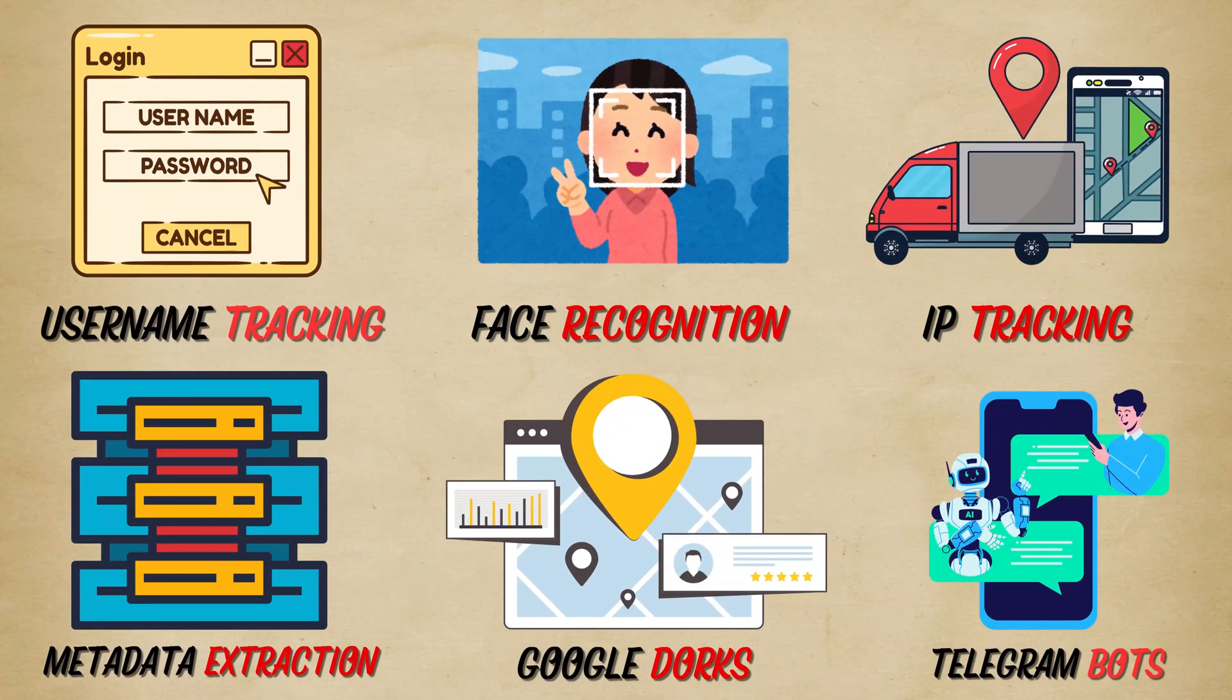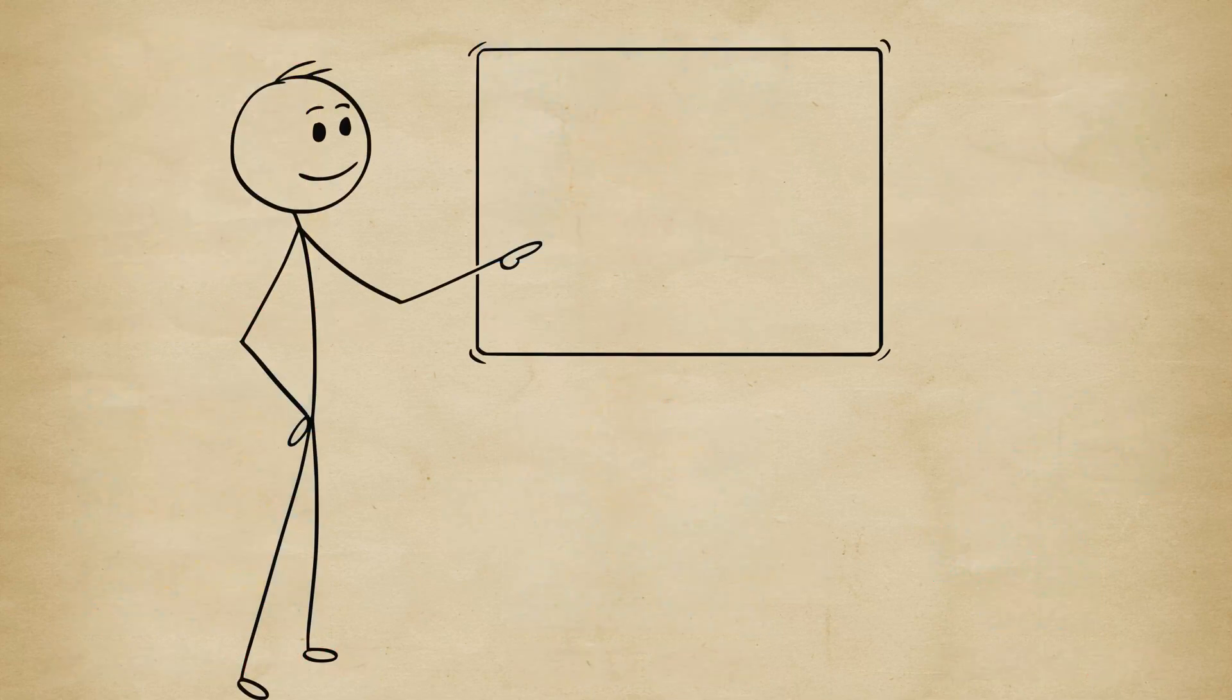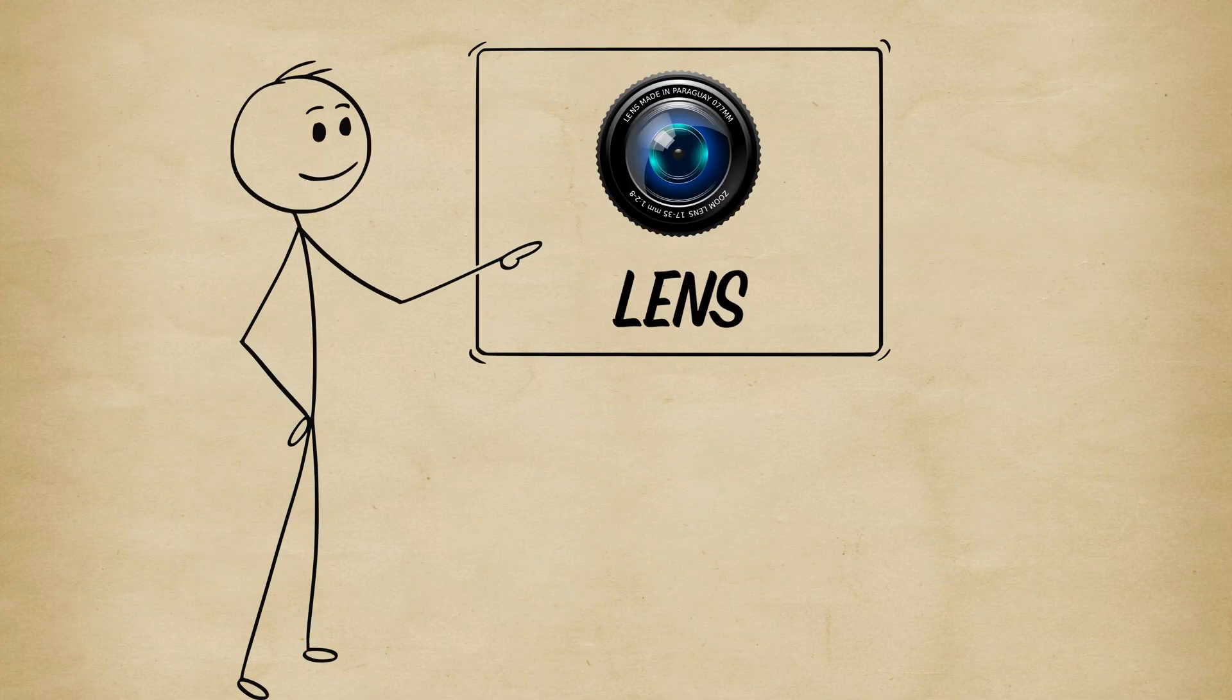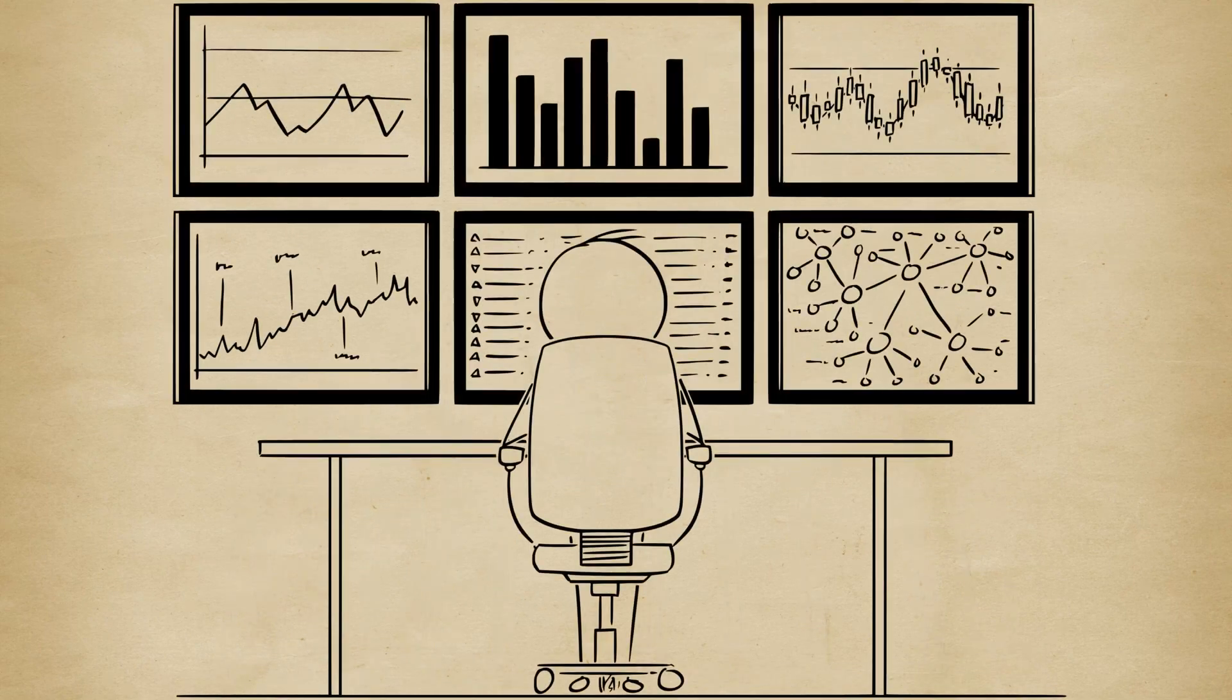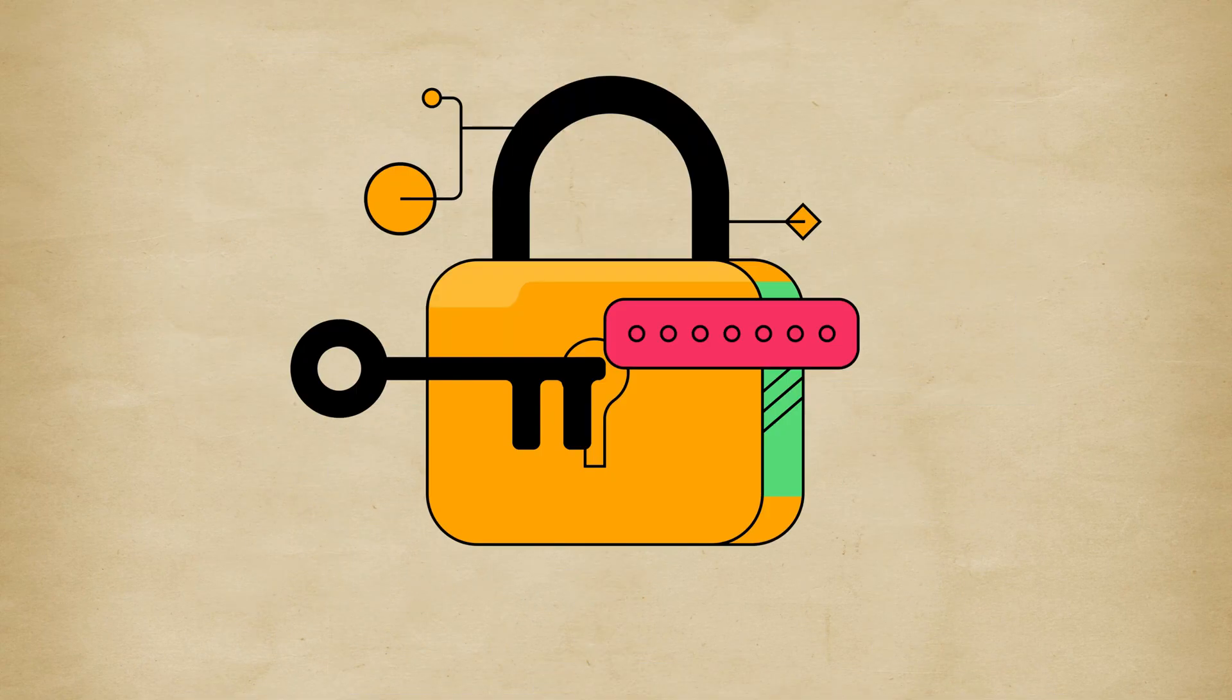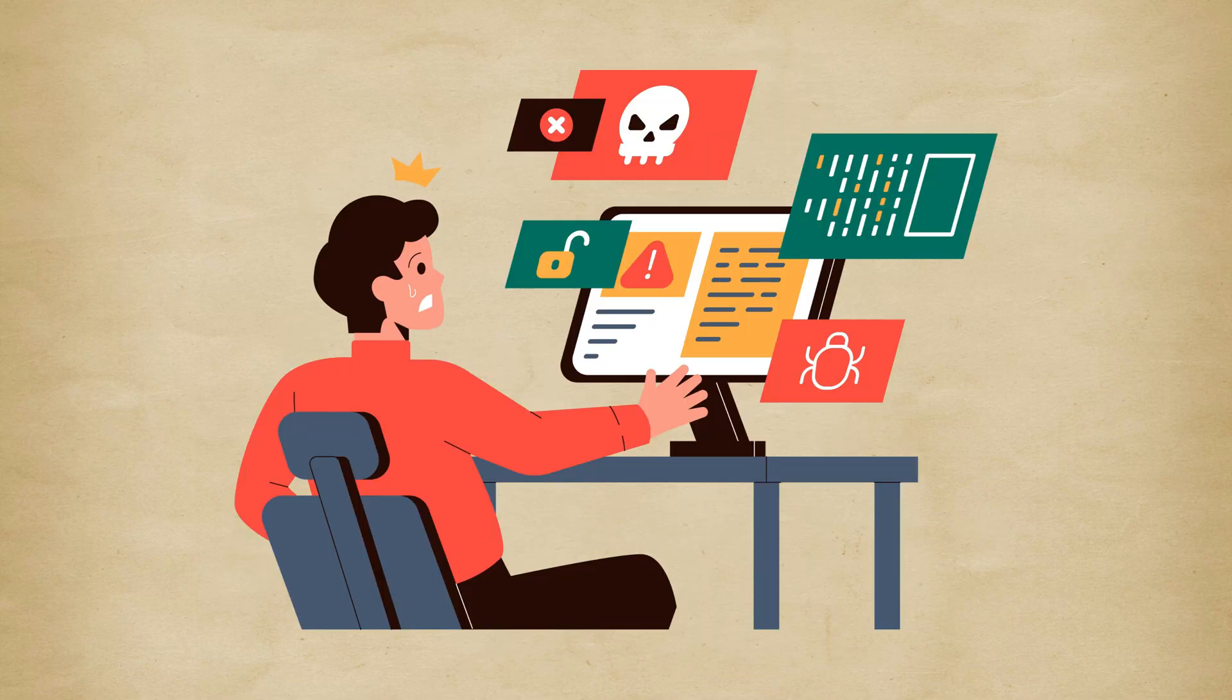So there you have it. Username tracking, face recognition, IP tracing, metadata, Google dorks, and Telegram bots. Each one is like a different lens, letting you see more of the digital picture. The scary truth, all of this uses publicly available information. No password cracking, no hacking into systems, which means anyone could do it, including people with bad intentions.